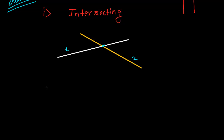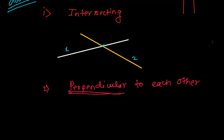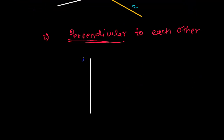Another condition is that the two lines may be perpendicular to each other. Perpendicular lines are a special case of intersecting lines. Suppose this is line 1 and this is line 2, and they intersect in such a way that they form exactly 90 degrees. So these lines are called perpendicular lines — line 1 is perpendicular to line 2, or line 2 is perpendicular to line 1.